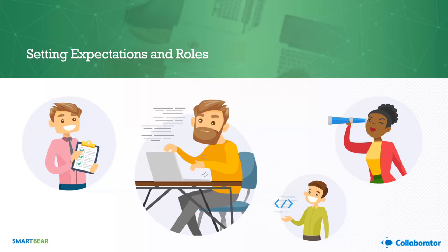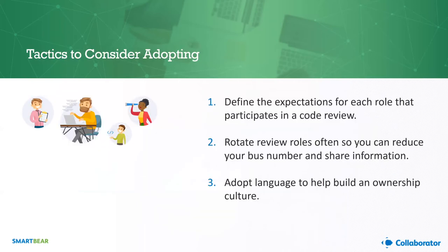Information radiators are very important. A few tactics to consider: define the expectations of each role that participates in a code review. In Collaborator, we have four specific out-of-the-box roles: authors, moderators, reviewers, and observers. You can tweak that to fit whatever workflow you want, but it's important to make sure everyone is aware of what the expectation is and what the expected timeline is for turning around a review. Rotating review roles is also really important — you can share information and reduce your bus number.